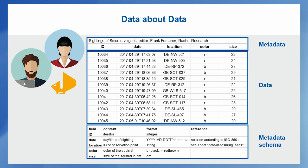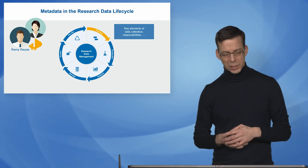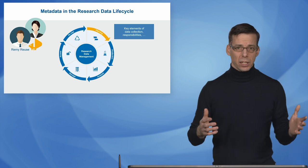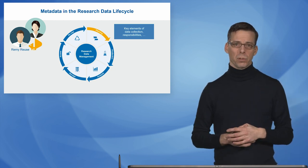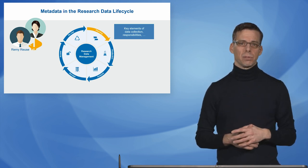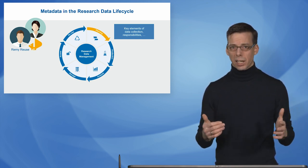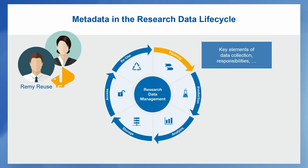When Louise looks back, she also notices that the observation points used by Rachel and Frank also gathered data on the size of the squirrels. Even though she was not interested in this data, it would make sense to record it, because others might be interested. This is illustrated by a follow-up project by Remy Reuse, who wants to look at the evolution of squirrels across Europe and is interested in squirrel size. If Louise had not ensured this information was preserved, it would be impossible for Remy to build on her work.